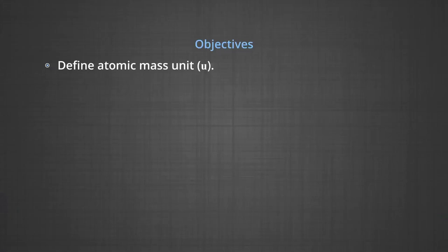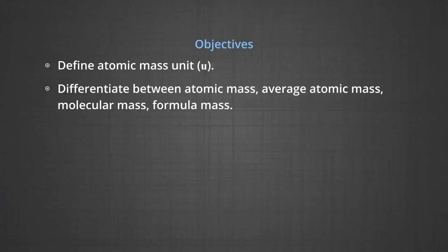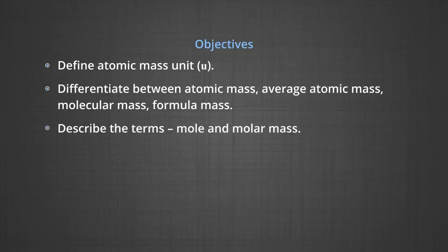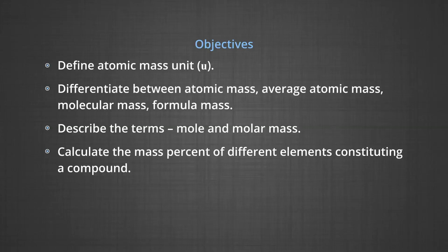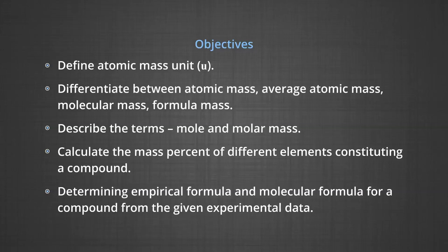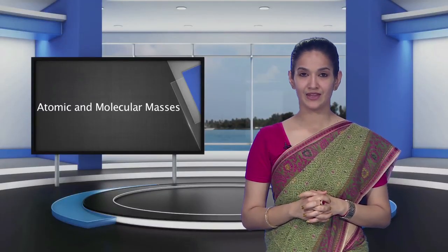After covering these contents, you will meet the following objectives: define atomic mass unit; differentiate between atomic mass, average atomic mass, molecular masses, and formula mass; describe the terms mole and molar mass; calculate the mass percent of different elements constituting a compound; determine empirical formula and molecular formula for a compound from given experimental data.